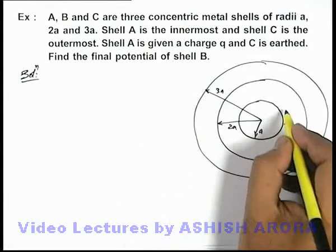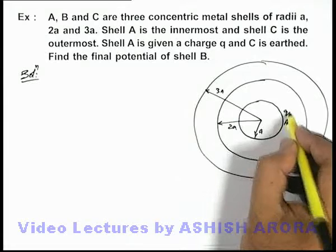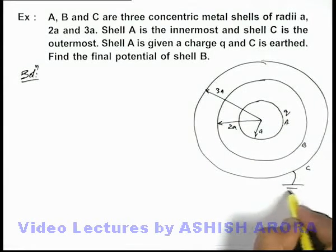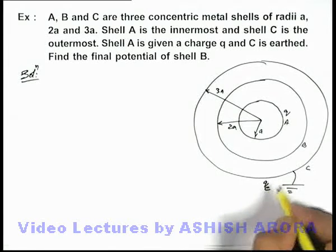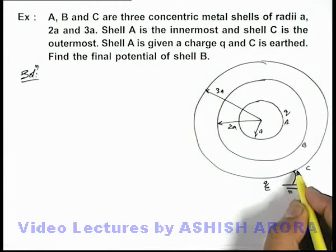And the situation on the innermost shell: a charge q is given and shell C is connected to earth, due to which we can say earth will supply a charge qₑ on the outer shell so that its final potential should be equal to zero.